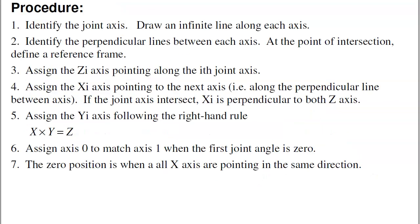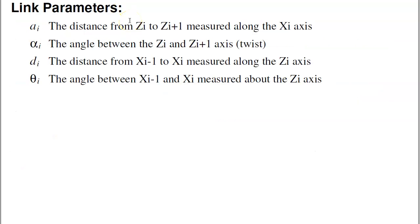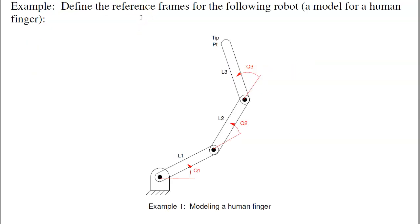The procedure to define the joints can be tricky — sometimes you have to draw the robot a couple of times to get it right. First identify the joint axes and draw infinite lines along each axis. Identify the perpendicular lines between the axes; the point of intersection is where the reference frame is defined. Z points along the axis, x points to the next axis, and y comes from x cross z. The 0 position is when all the x-axes line up. The four link parameters are: a — distance from z_i to z_{i+1} measured along the x-axis; alpha — the twist; d — the displacement; and theta — the rotation. Those four parameters define each link and, collectively, define the robot.